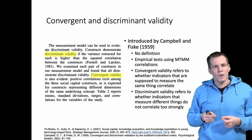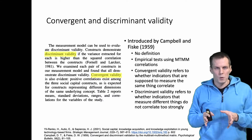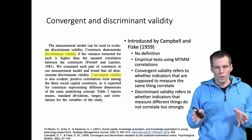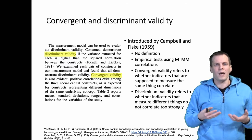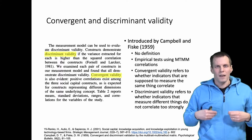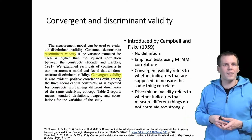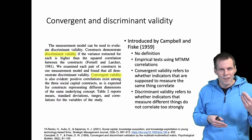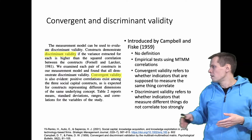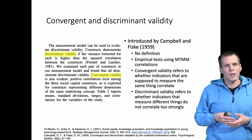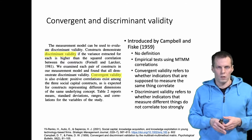The problem with this paper is that it did not explain how these concepts should be applied outside the context of multi-trait multi-method matrices. Research after that started to attach other meanings to these terms. Convergent validity came to refer generally to whether items correlate highly enough to be considered measuring the same thing, and discriminant validity came to mean that items supposed to measure different things don't correlate too highly.